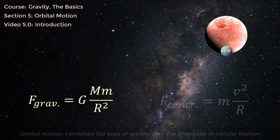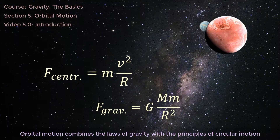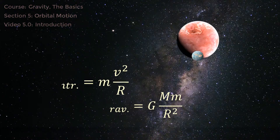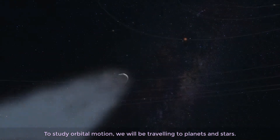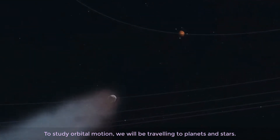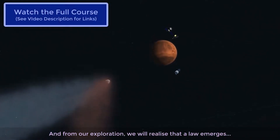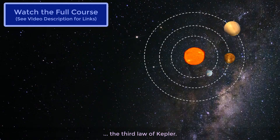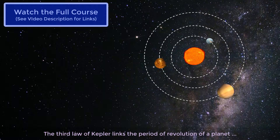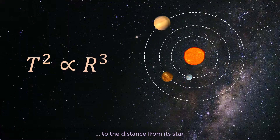Orbital motion combines the laws of gravity with the principles of circular motion. To study orbital motion, we will be travelling to planets and stars. From our exploration, we will realize that a law emerges — the third law of Kepler. The third law of Kepler links the period of revolution of a planet to the distance from its star.